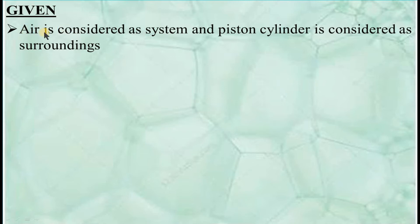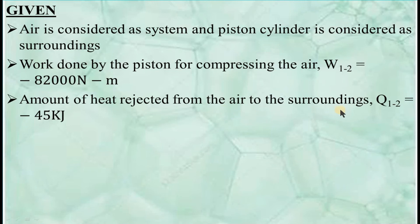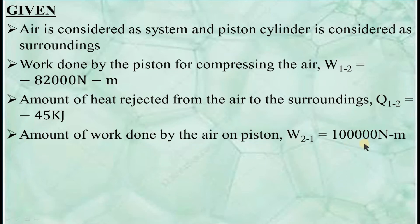Now I will list out the given conditions from the question. We will consider air as the system and piston cylinder as surroundings. Work done by the piston on compressing the air is minus 82,000 Nm, taken as W1 to 2. The negative sign indicates work is done on the system, because here air is the system. The amount of heat rejected to the surroundings from the air is minus 45 kJ, taken as Q1 to 2. Negative sign indicates heat rejection. The amount of work done by the air on piston is 1 lakh Nm, taken as W21. The air moves the piston towards the left, therefore work is done by the system, so the sign convention for W21 is positive.